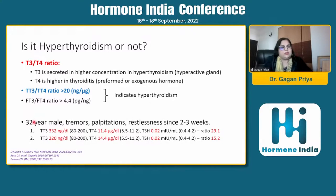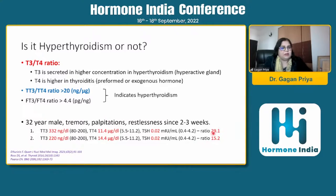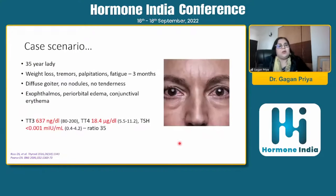Consider two patients presenting with thyrotoxic symptoms. In the first picture, total T3 is high, total T4 is not as high, giving a ratio of 29 — possibly hyperthyroidism. In the second picture the ratio is 15 — possibly thyroiditis. So the T3/T4 ratio can be a useful discriminating tool when evaluating these two cases.